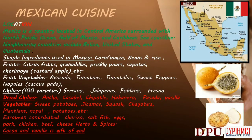Mexican Cuisine — Location: Mexico is a country located in Central America, surrounded by the North Pacific Ocean, Gulf of Mexico, and Caribbean Sea coastline. Neighboring countries include Belize, United States, and Guatemala. Staple ingredients used in Mexico include corn, maize, beans and rice. Fruits: citrus fruits, granadillas, prickly pears, sopoetas, cherimoya, custard apple, etc. Fruit-vegetables: avocado, tomatoes, tomatillos, sweet peppers, nopales, cactus pads, chilis — 100 varieties including serrano, chilipinos, jalapeños, poblano, fresno, etc. Dried chilis: ancho, cascabel, chipotle, habanero, pasado, pasilla. Vegetables: sweet potatoes, jicamas, squash, chayotes, plantains, nopales, potatoes, etc. European contributions: chorizo, saltfish, eggs, pork, chicken, beef, cheese. Herbs and spices: cocoa and vanilla are considered gifts of God.